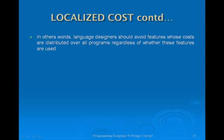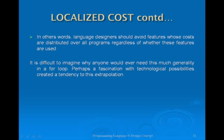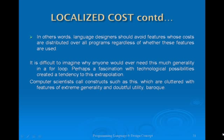In other words, language designers should avoid features whose costs are distributed over all programs regardless of whether these functions are needed. It is difficult to imagine why anyone would ever need this much generality in a for loop. Perhaps a fascination with technological possibilities creates a tendency toward extrapolation. Computer scientists call constructs with extreme generality and doubtful utility 'baroque' — a term from the learning curve of language design.